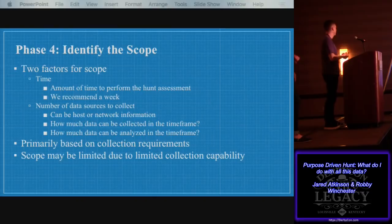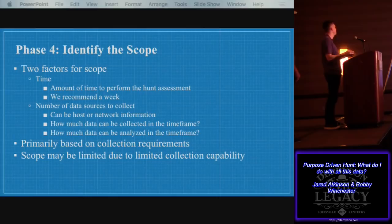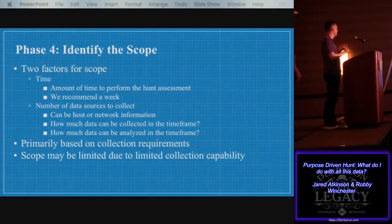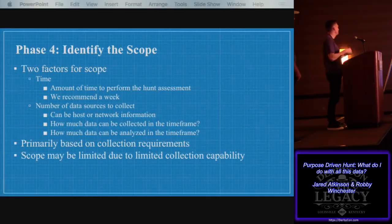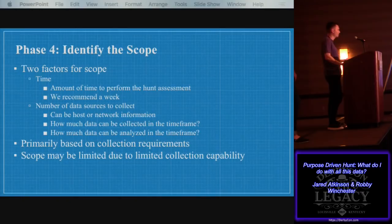Phase four: identify the scope. We recommend a week because it lets you shape everything else around that and at the end of every week have something you've accomplished. Consider the number of data sources you can collect — whether it's from a pre-existing agent, agentless scanning, PowerShell, or network data. Take into account the amount of time you have and how much data you're getting. Have realistic goals. The benefit of owning a network is that it's yours and you have time. Rather than trying to rush and do everything poorly, do it right in incremental steps and grow that quality defense.